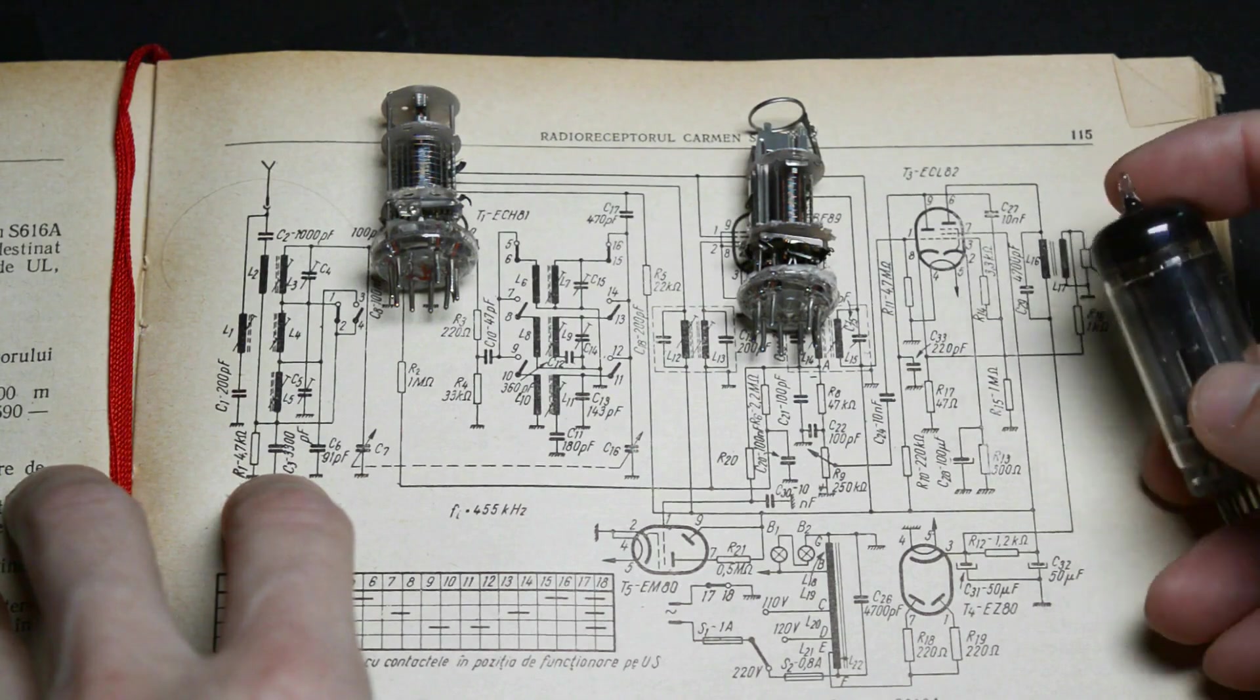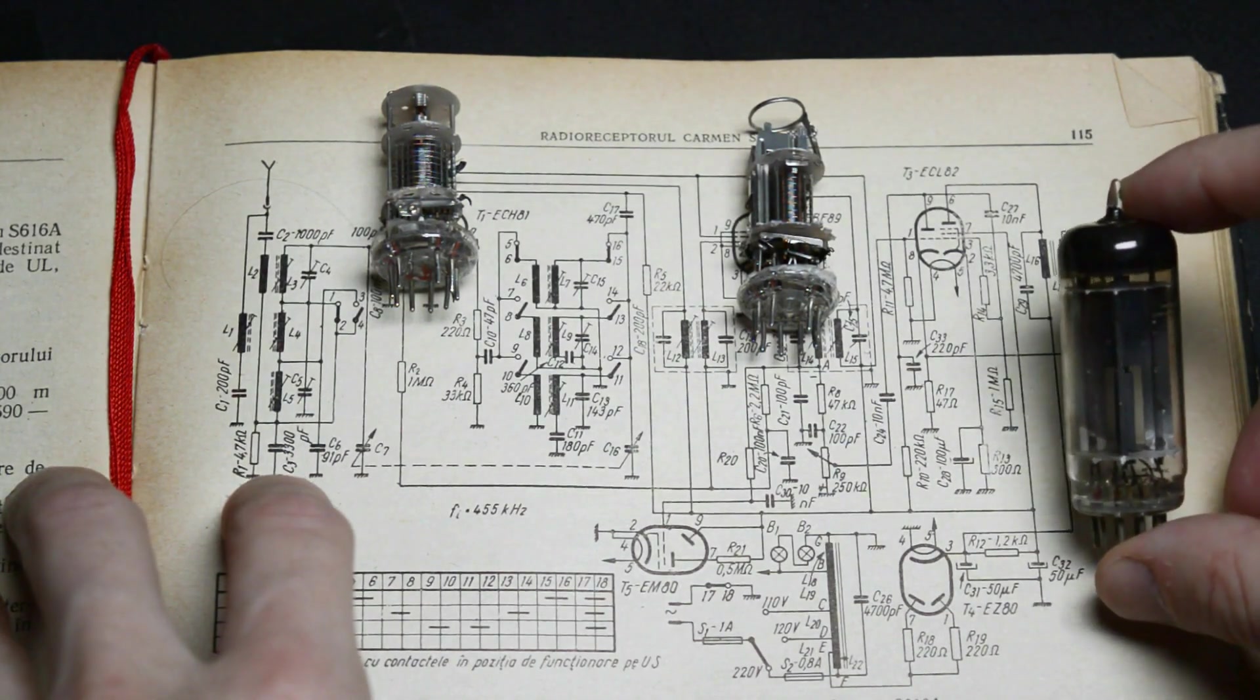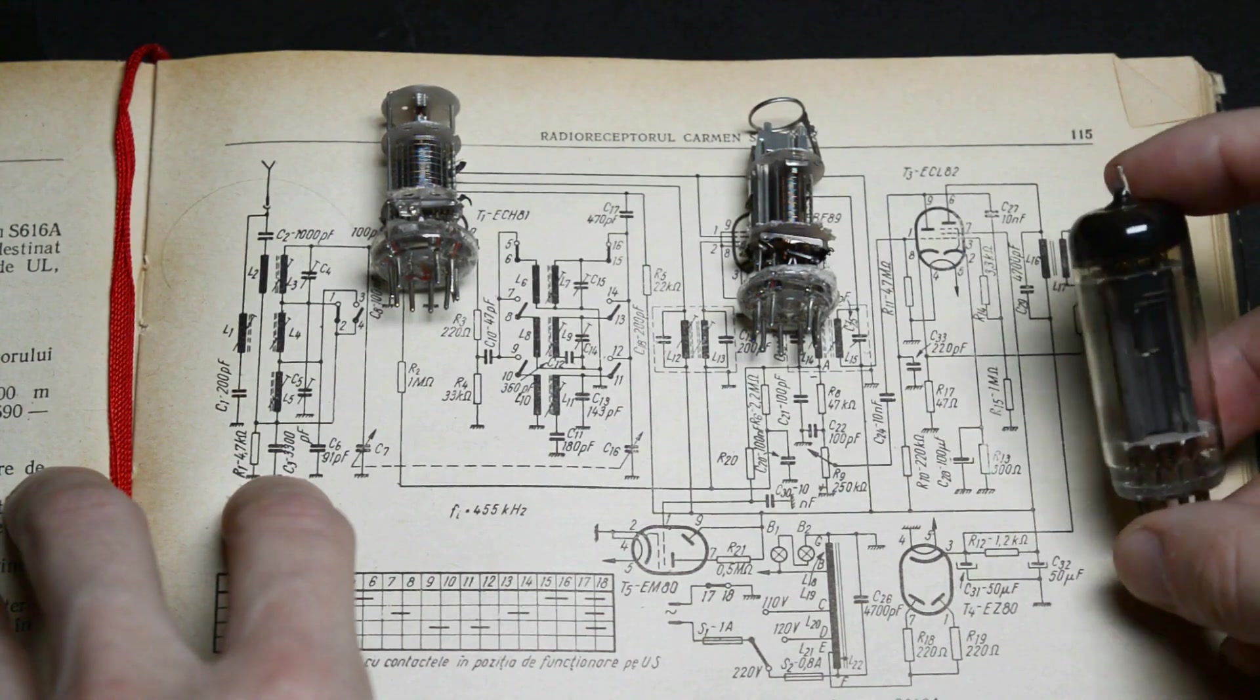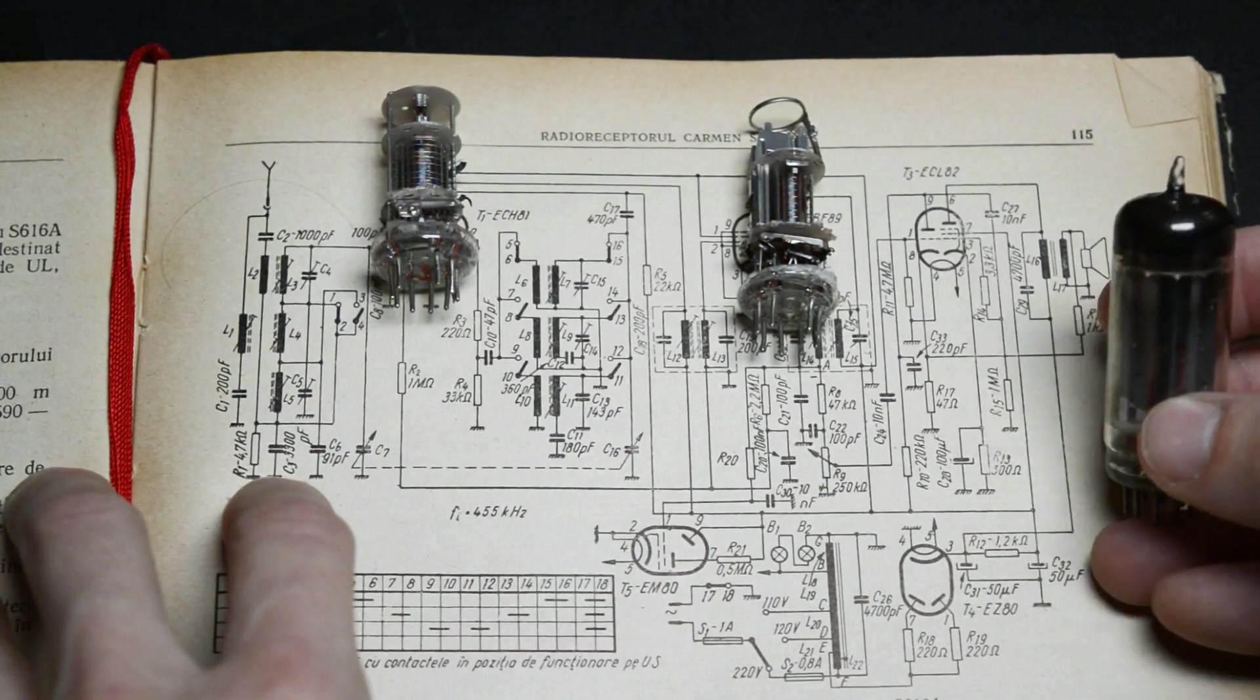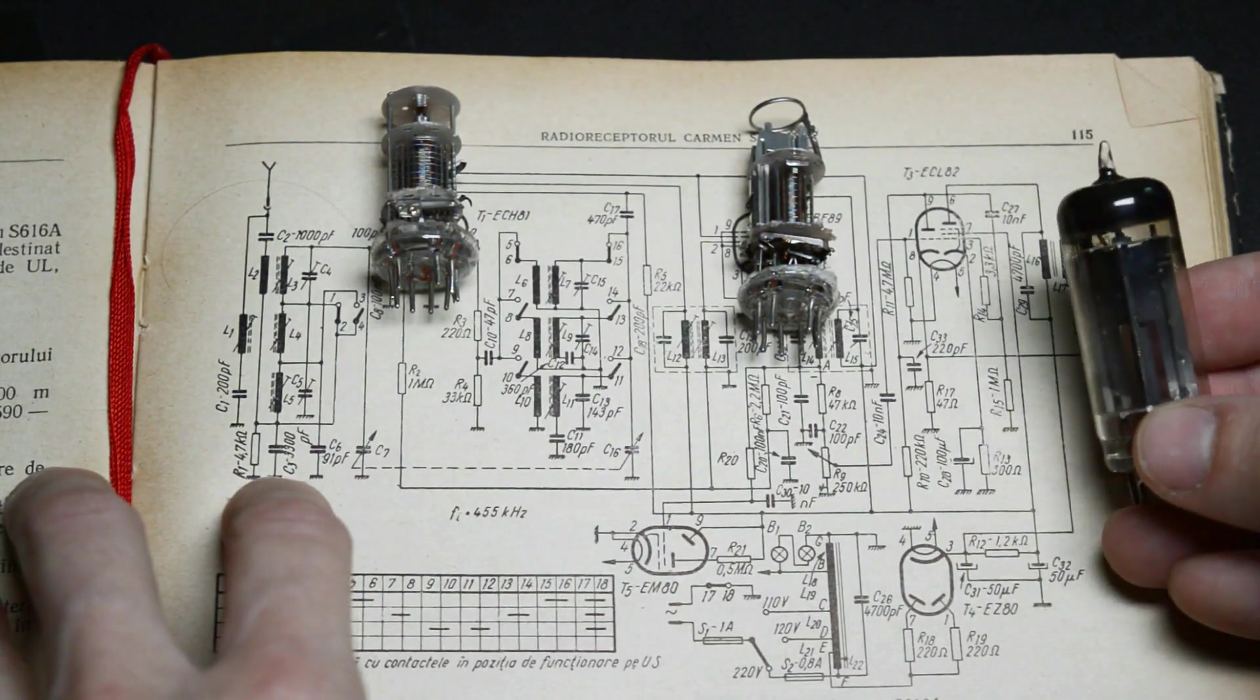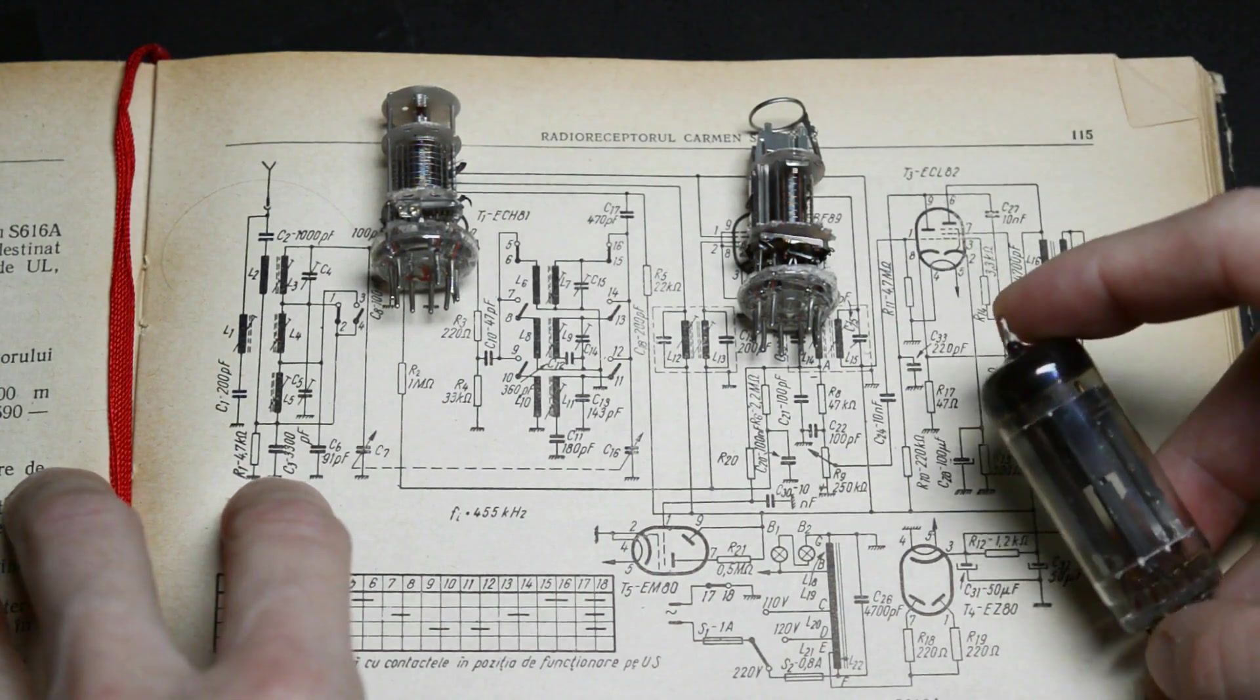Now again you may have noticed that this tube has an intact glass envelope, but the tube is broken nevertheless. Why? Well you may just make out that the cathode is not really in the middle, it's bent out of shape and there's pieces falling off from it. Why did that happen? Well we'll be looking at that in a moment.